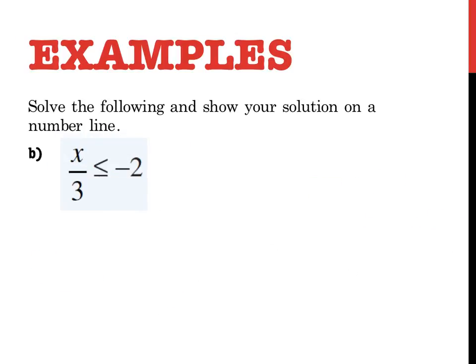This one here, solve the following and show your solution again on a number line for B. X divided by 3 is less than or equal to negative 2. So this is the side at which my pronumerals on. This is the side that I have to deal with. X is currently being divided by 3. I get rid of a division by 3 by multiplying. If I multiply this side by 3, I have to multiply that side by 3. So X is less than or equal to negative 6.